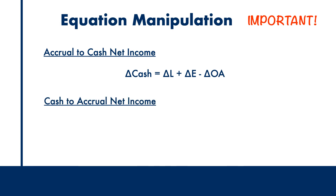Moving on to the reconciliation of cash to accrual net income. We are simply going to rearrange the equation to read delta E equals delta A minus delta L. This means that we would add any increase in assets and subtract any increases in liabilities to net income. Note that the signs in this equation are the opposite of what we saw above.